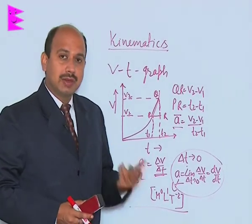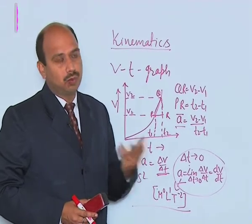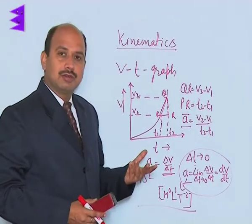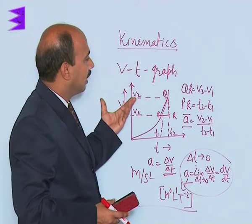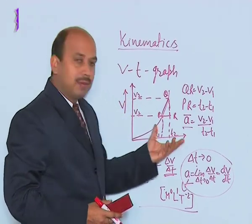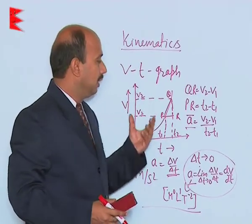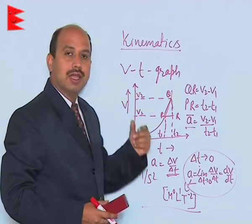It can be changed by changing either magnitude or direction or both magnitude and direction. Now we have seen the v-t graph for non-uniform acceleration; it means that is variable acceleration.